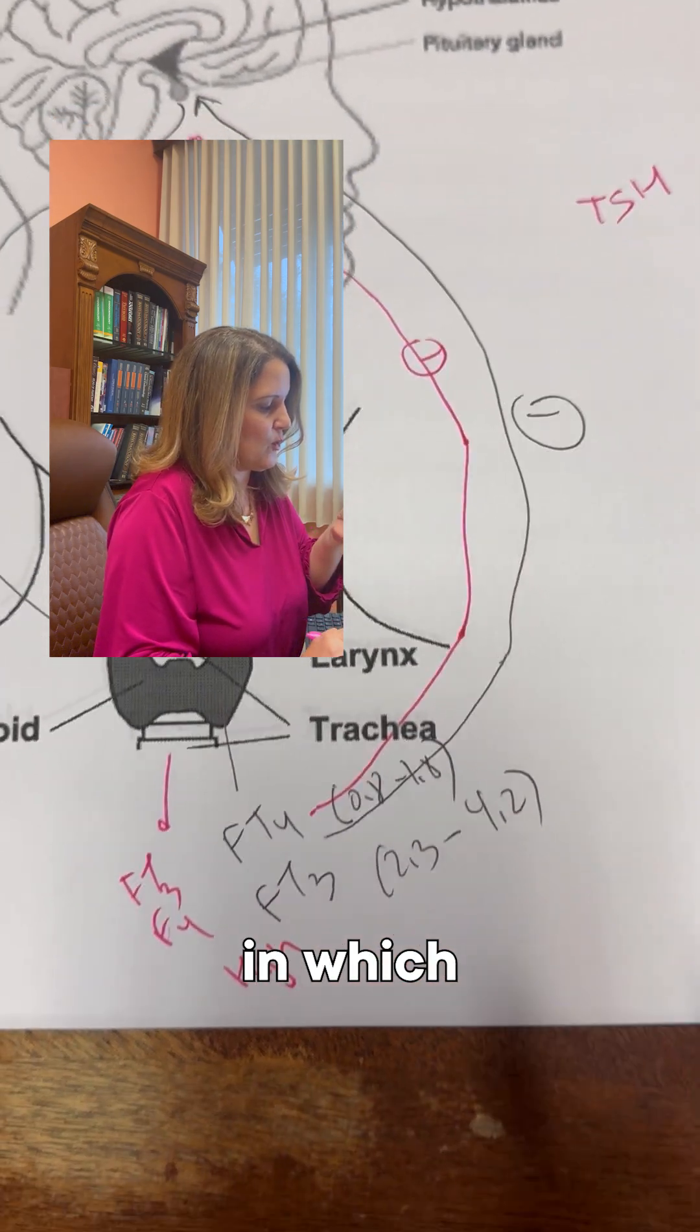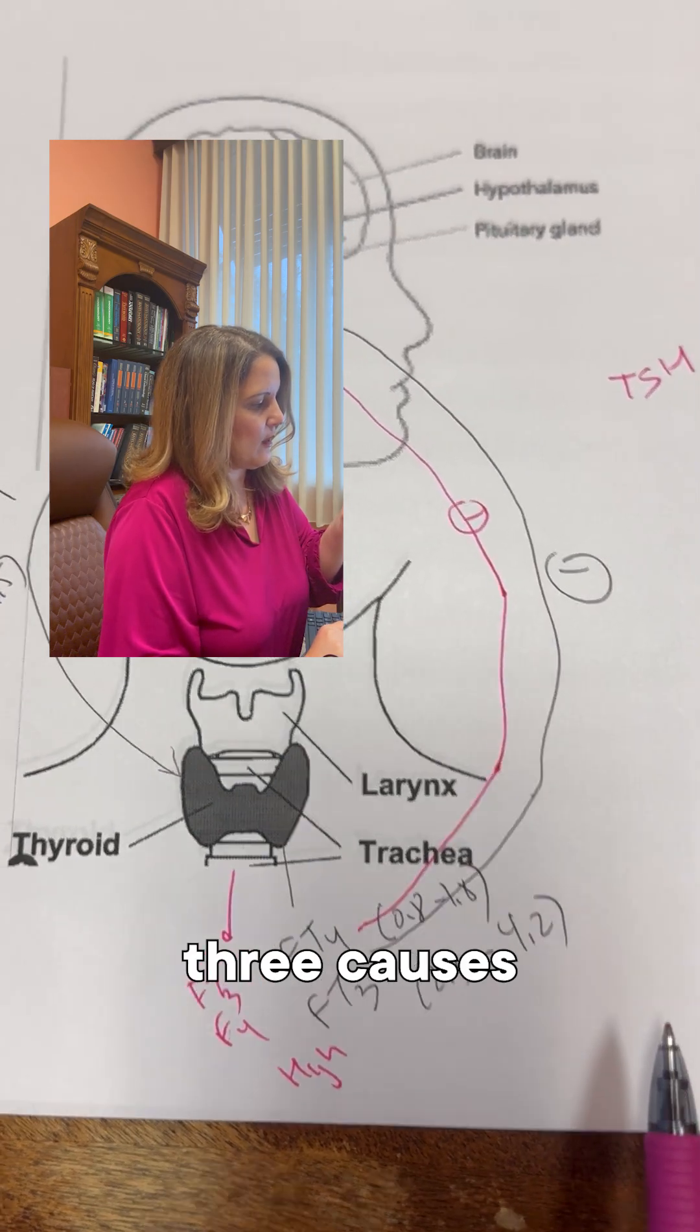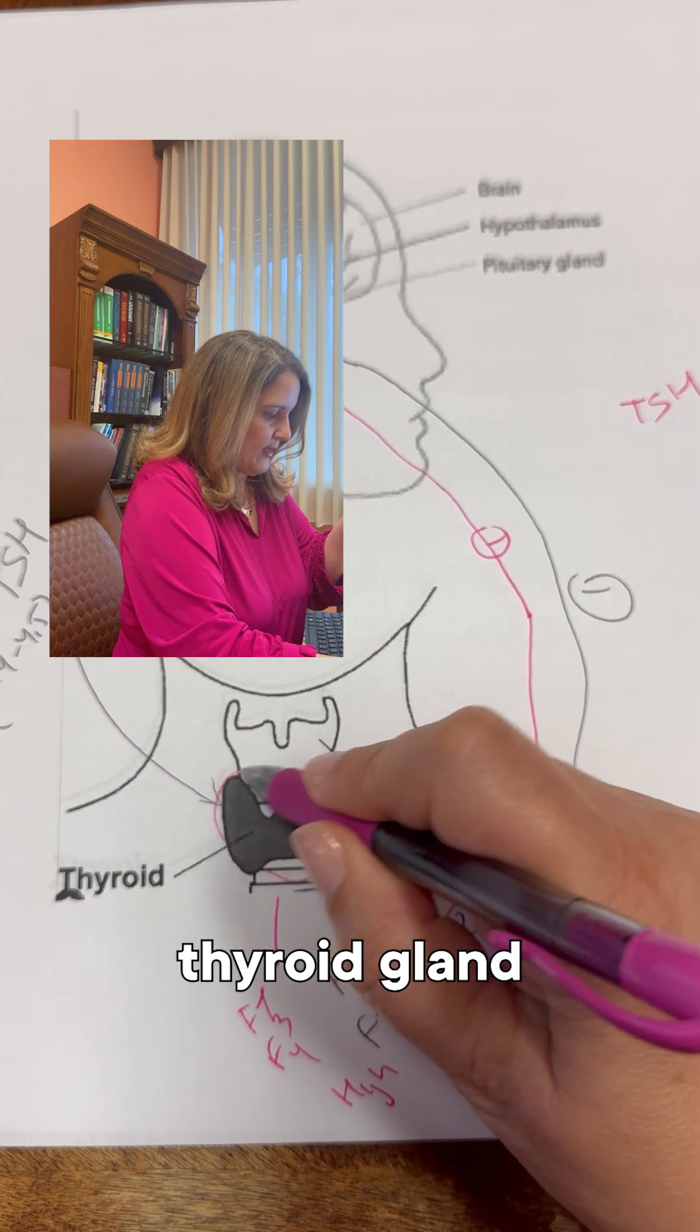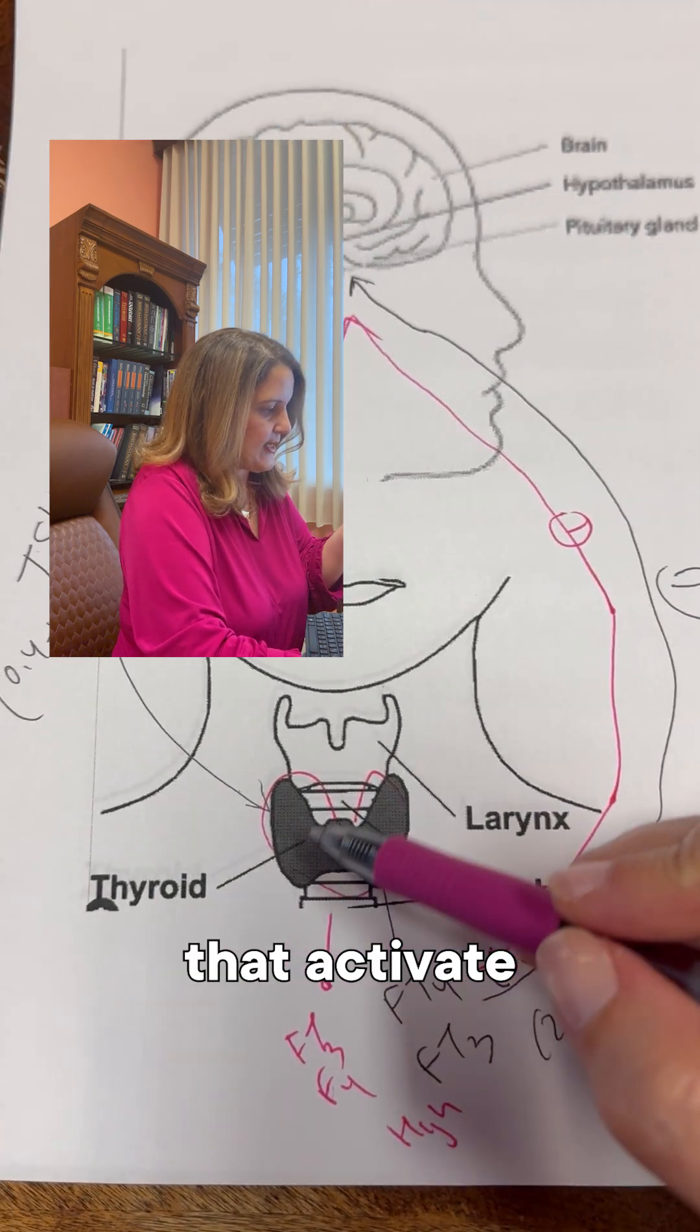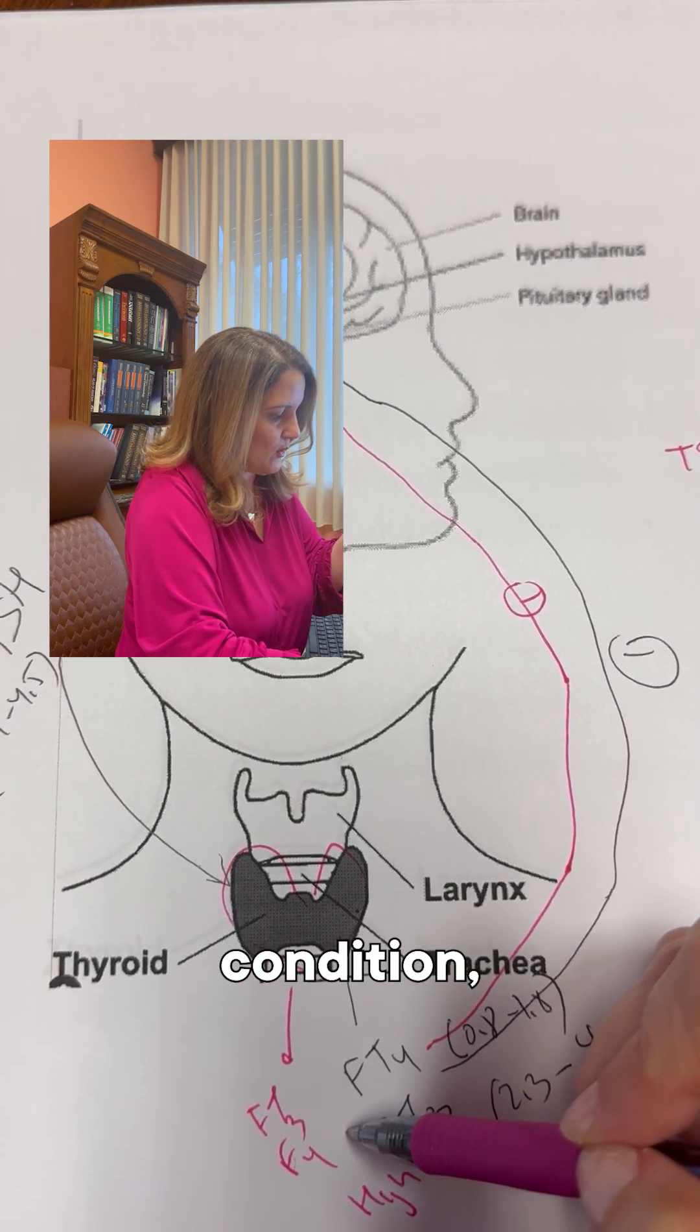This is a condition called thyroid toxicosis, in which you have too much thyroid in your system. The main three causes are: an overactive thyroid gland due to antibodies that activate the thyroid to make too much hormone, like in Graves' disease, an autoimmune condition;